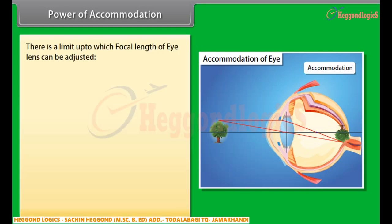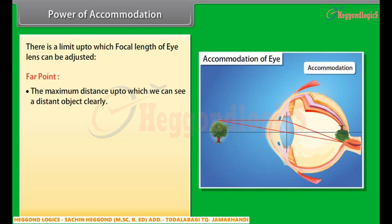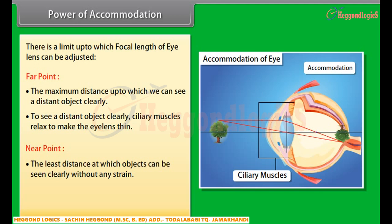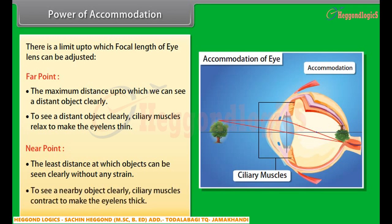There is a limit up to which the focal length of the eye lens can be adjusted. Far point — the maximum distance up to which we can see a distant object clearly. To see a distant object clearly, ciliary muscles relax to make the eye lens thin. Near point — the least distance at which objects can be seen clearly without any strain. To see a nearby object clearly, ciliary muscles contract to make the eye lens thick.